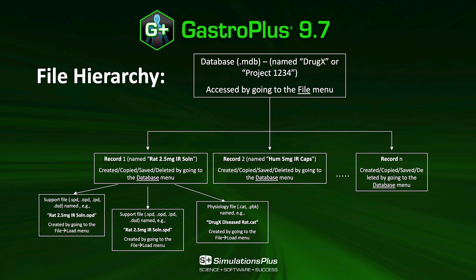And record number 2 is for a human at 5 milligrams for a capsule immediate release. You can create as many records as you want. Within each individual record, you have a number of support files that can be created to integrate either measured preclinical or clinical PK data, particle size distribution, as well as many other in vitro measurements. In the next videos of this tutorial, we will describe how to create a database, how to create a record, and how to import these support files into the platform.